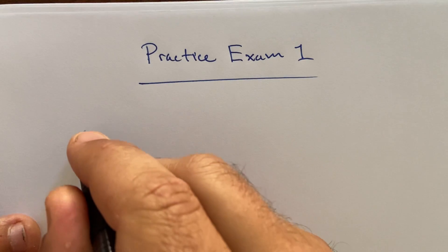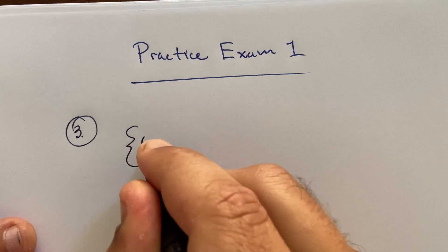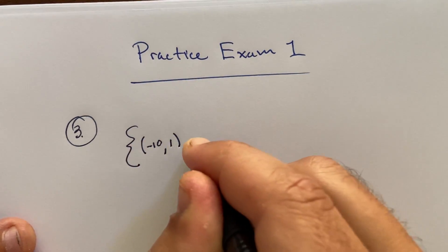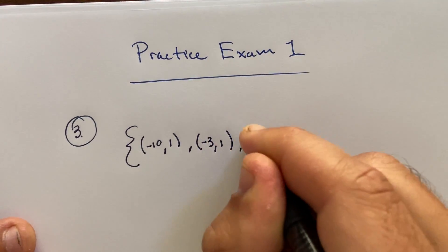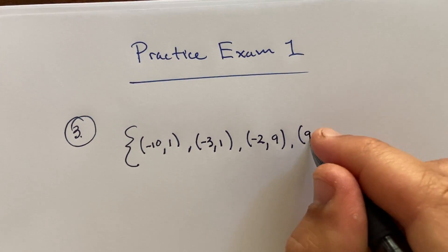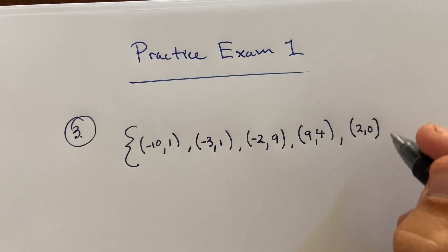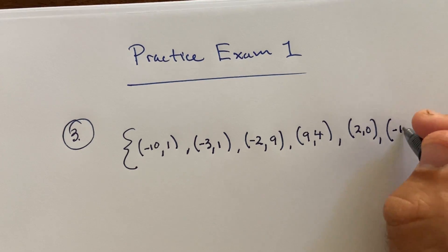I'm not going to do every problem, and I also don't have the actual exam because my printer is out of ink at the moment, so I'm having to just look at the exam separately and write out the problems here. I'm actually going to start at number three. It says for this relation we have negative ten one, negative three one, negative two nine, nine four—a bunch of ordered pairs making up a relation.